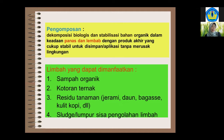Yang ketiga adalah residu tanaman. Beda dengan kotoran ternak, residu tanaman seperti jerami, serasah daun, bagas, kulit kopi itu banyak mengandung karbon tetapi nitrogennya rendah, atau C/N rasionya tinggi. Salah satu contoh, bagas itu sekitar 70an, kulit kopi bahkan lebih tinggi. Ini menandakan bahwa residu tanaman jika dikomposkan memerlukan campuran bahan lain.